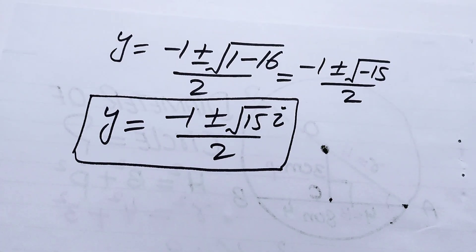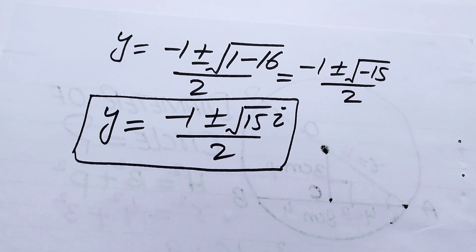So the final answer is y equals 1 as the real solution, and y equals (negative 1 plus or minus i square root of 15) over 2 as the complex solutions. Thank you so much for watching this video. Please subscribe to my channel for more exciting videos.